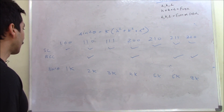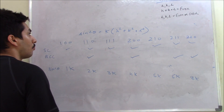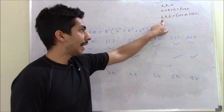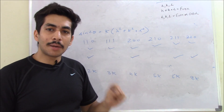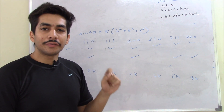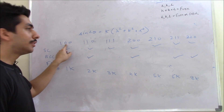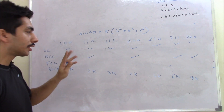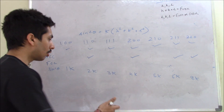Now for face-centered cubic (FCC), the criteria is that h, k, l should be all even or all odd. Here we're talking about individual values, not the sum. Zero is considered an even number. So (1,0,0) is odd-even-even — not allowed. (1,1,0) is odd-odd-even — not allowed. (1,1,1) all three are odd — allowed, so a pattern at 3K.